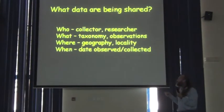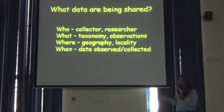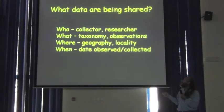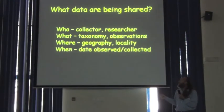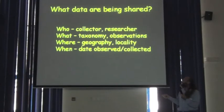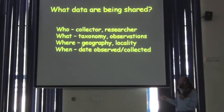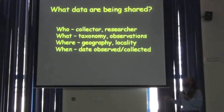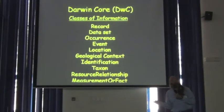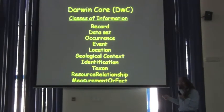They're the basic who, what, where, and when about occurrences. The who includes things like the collector and researcher; the what, the taxonomy and the observations; where, geographically speaking; and when, the date the things were observed as well.